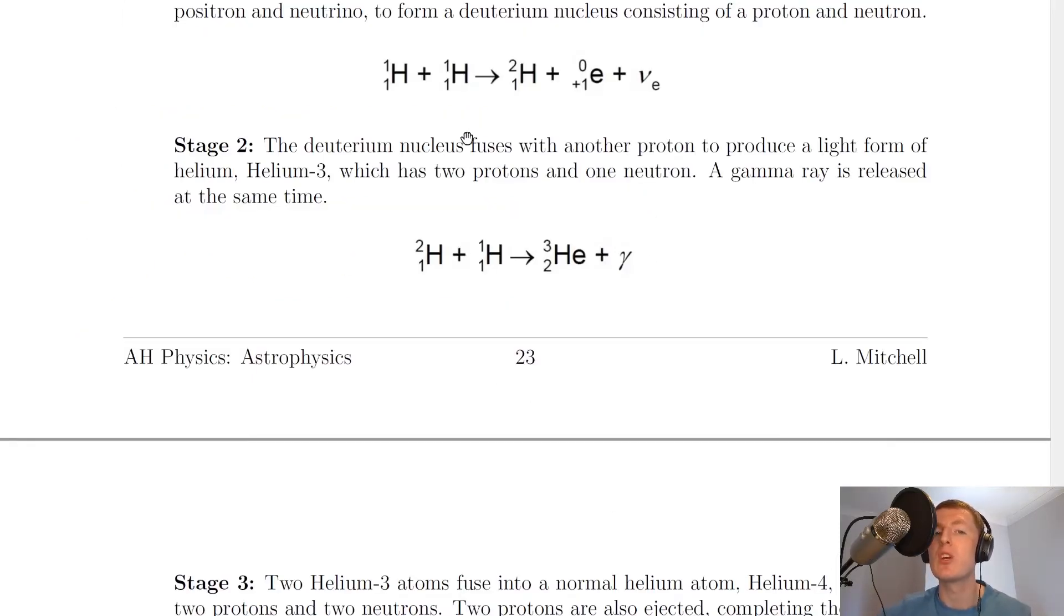Stage two is when the deuterium nucleus, hydrogen-2, fuses with another proton, the hydrogen-1, to produce a light form of helium, helium-3, which has two protons and one neutron. A gamma ray is released at the same time.